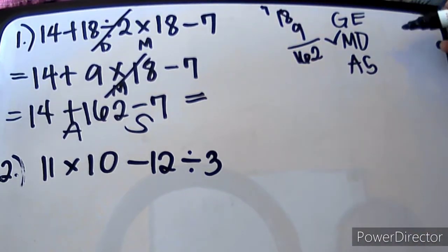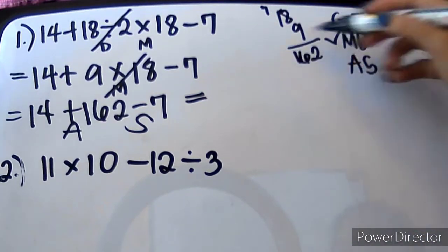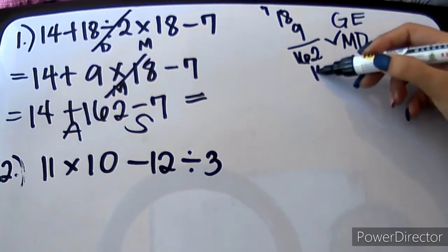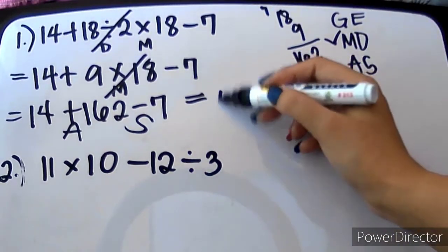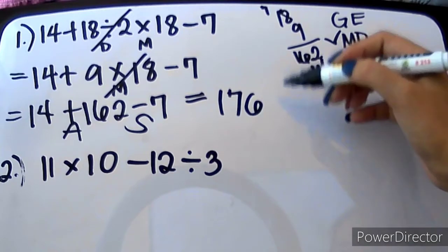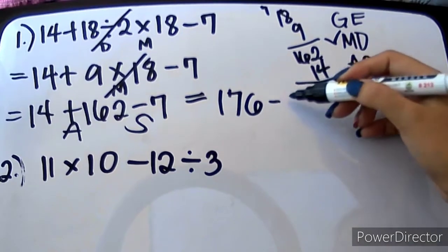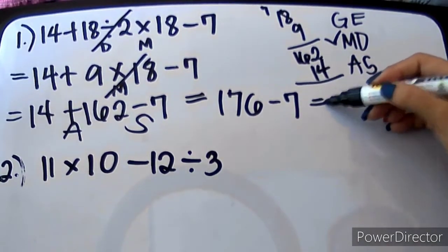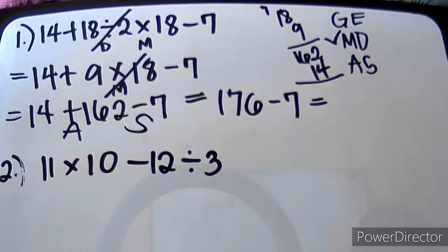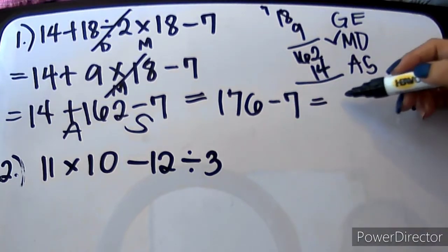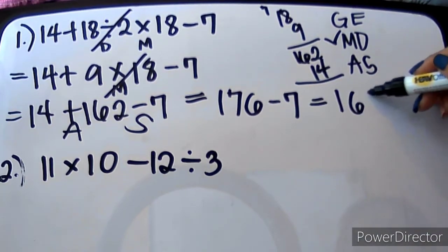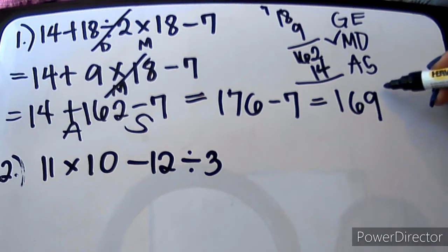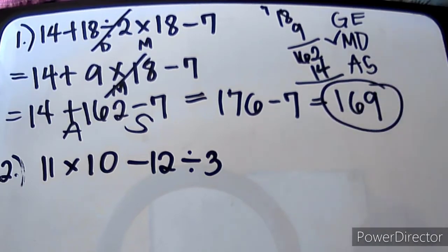So, addition muna tayo. We will be adding 162 with 14. That will give us 176 bago tayo ma-minusan ng 7. And to get our final answer, isa lang naman yung operation. So, that is 169. This is our answer.